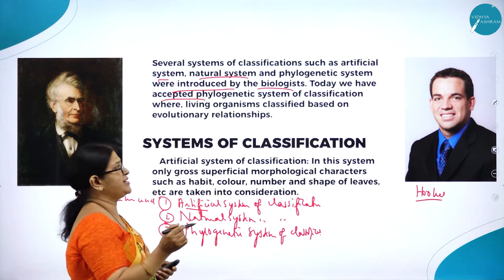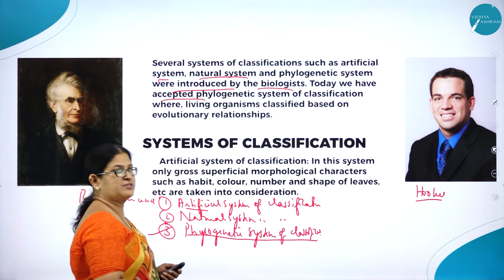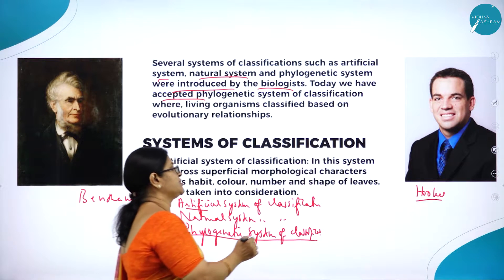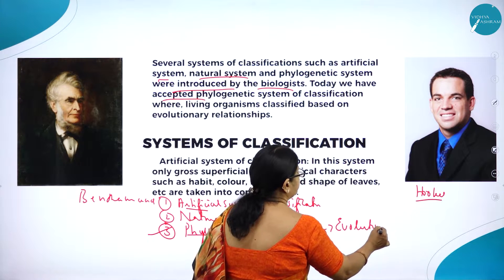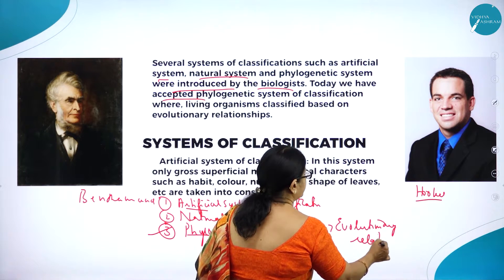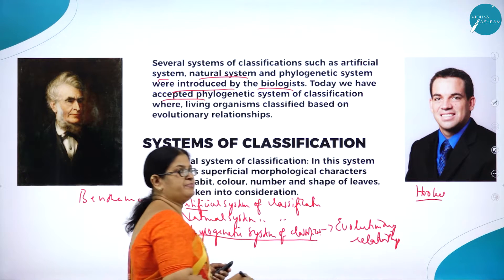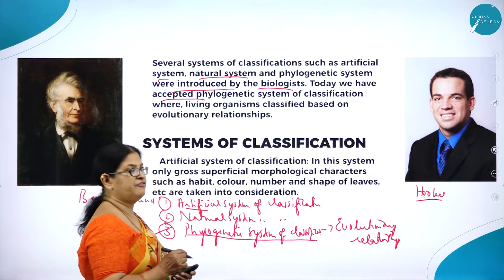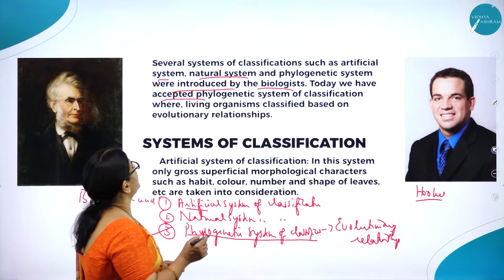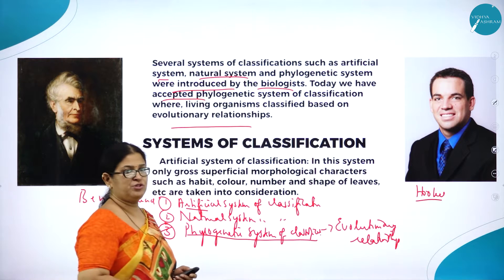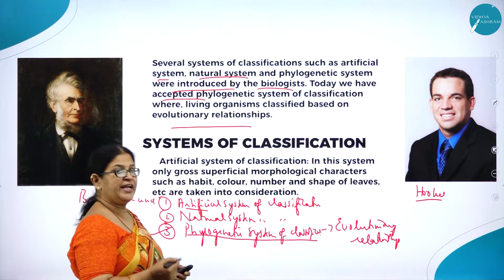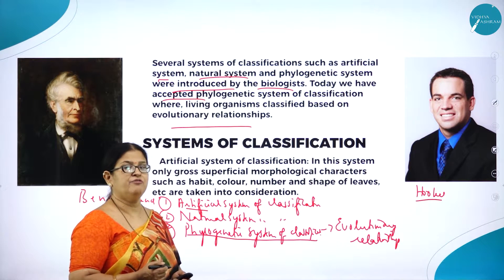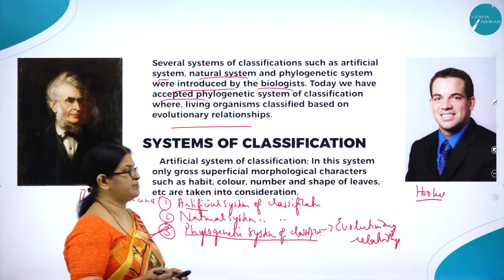We have accepted the phylogenetic system of classification among the three. Why? Because it is based on evolutionary relationships — based on origin. That is the reason the system of classification we are following right now is the phylogenetic system of classification, where living organisms are classified based on evolutionary relationships. Let us now study in detail about these three systems, particularly the phylogenetic system.